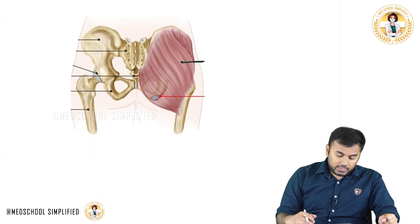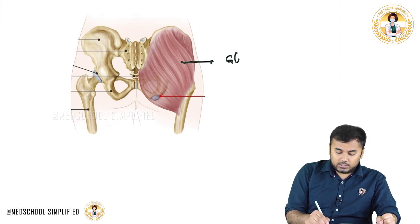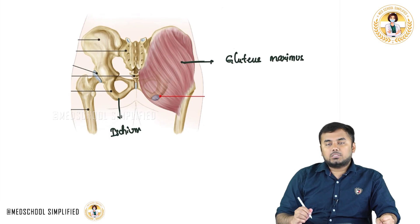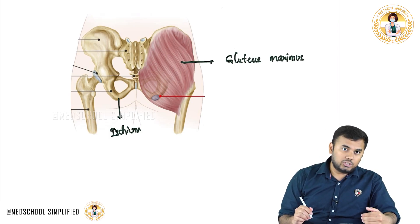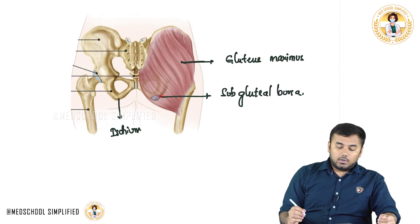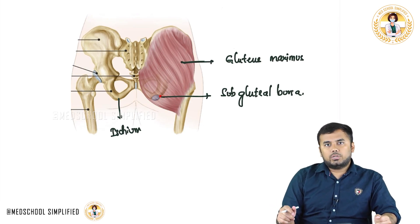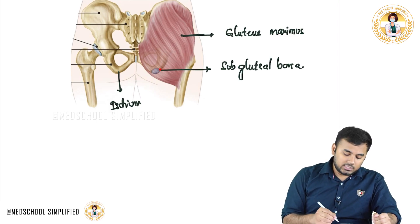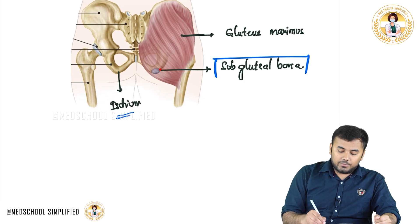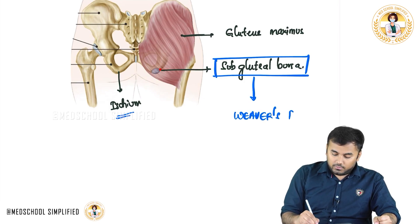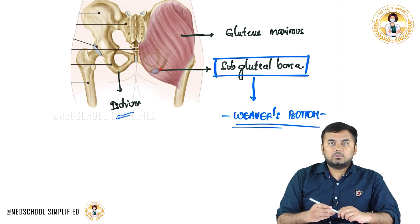This muscle is your gluteus maximus. On the surface of the ischium, there is a small bursa present below the gluteus maximus and above the ischium bone — this is called the sub-gluteal bursa. Weavers who sit for long periods cause constant friction: the gluteus maximus compresses this bursa against the ischium, leading to inflammation of the sub-gluteal bursa. This condition is called weaver's bottom.